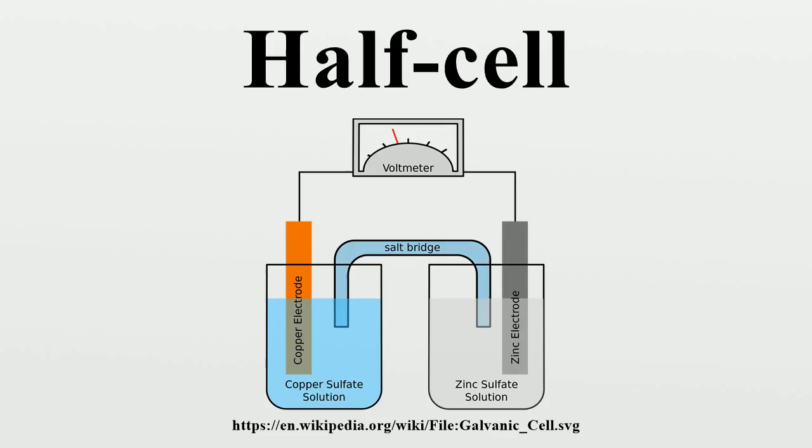The electrochemical series consists of standard electrode potentials and is closely related to the reactivity series. It was generated by measuring the difference in potential between the metal half-cell in a circuit with a standard hydrogen half-cell, connected by a salt bridge.